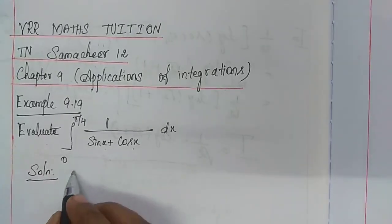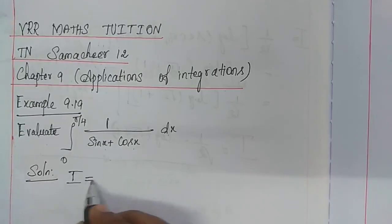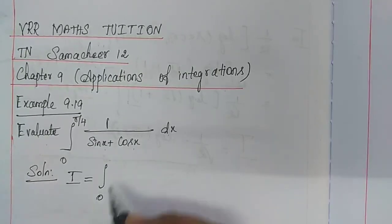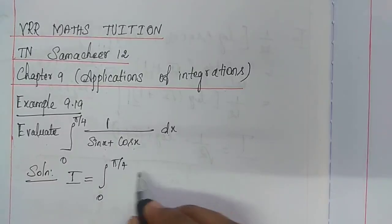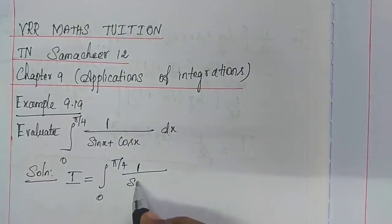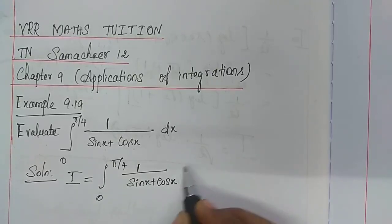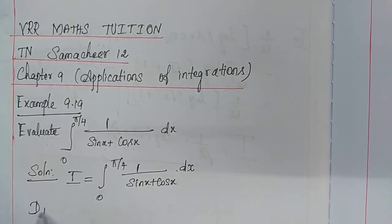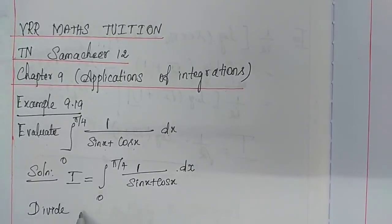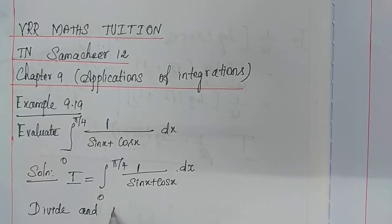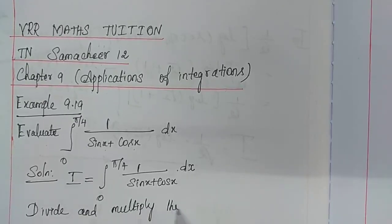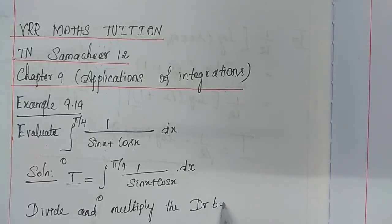Solution. Let i = integral from 0 to π/4 of 1/(sin x + cos x) dx. We divide and multiply the denominator by √2.